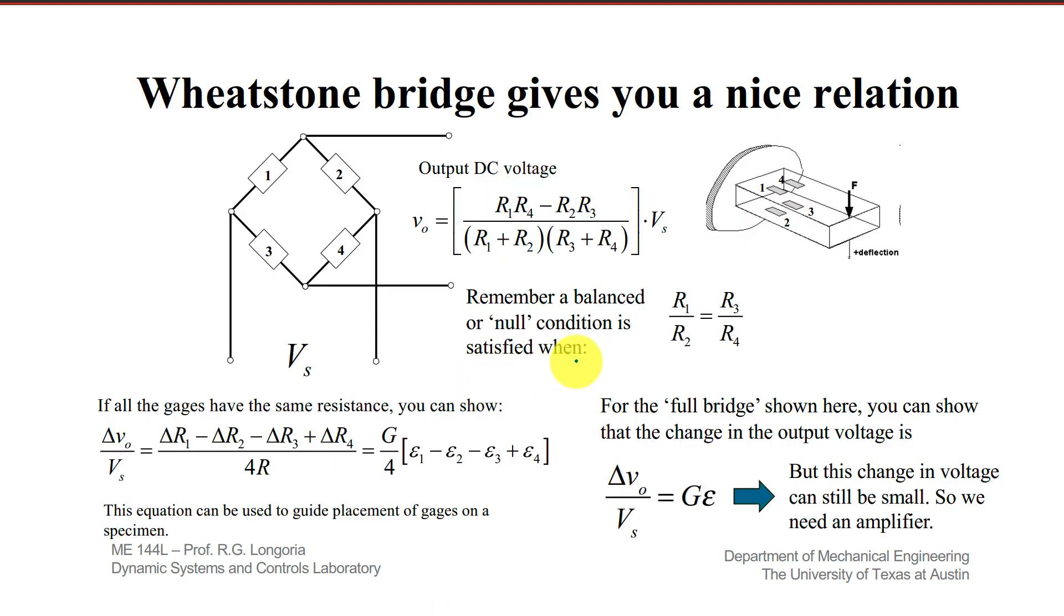Now on this slide, showing you the whole combination, we have the Wheatstone Bridge, showing the four gauges and how they're mounted on a typical cantilever beam. This ends up giving you a really nice relationship for that change in voltage as you get change in resistance. I'll show you that there's actually a nice relationship here. It shows you what the output voltage will be from this Wheatstone Bridge. Here Vs is the input voltage.